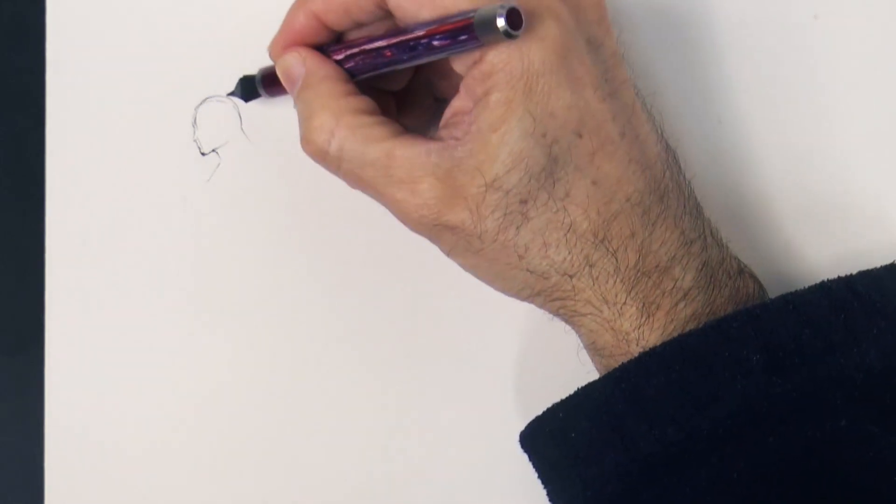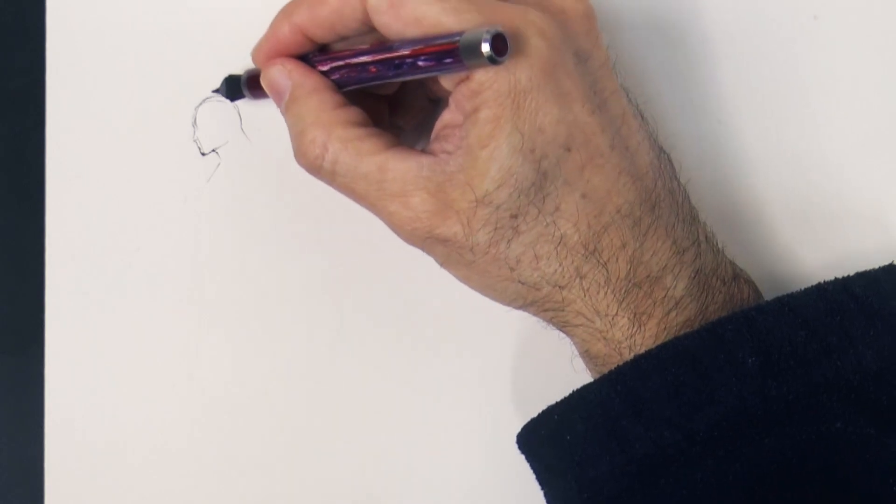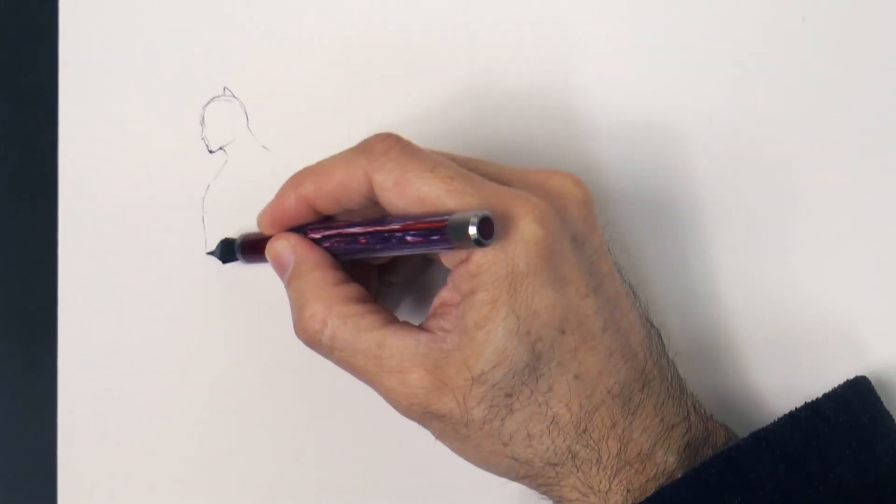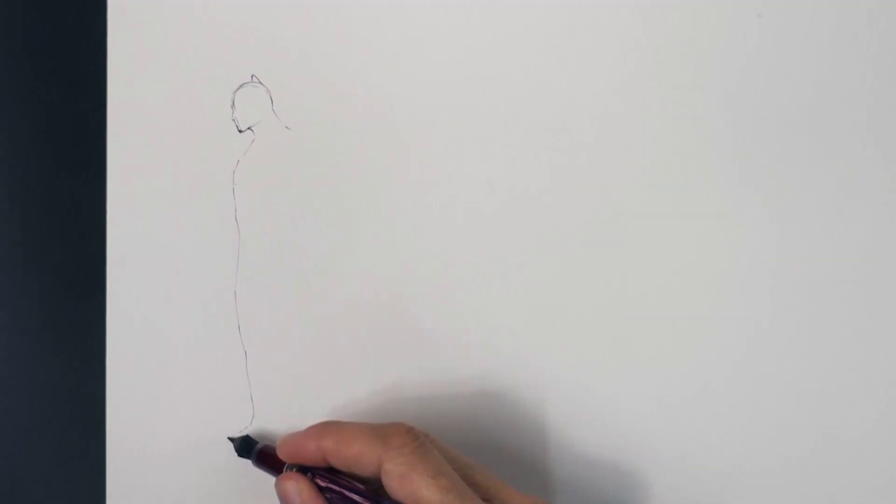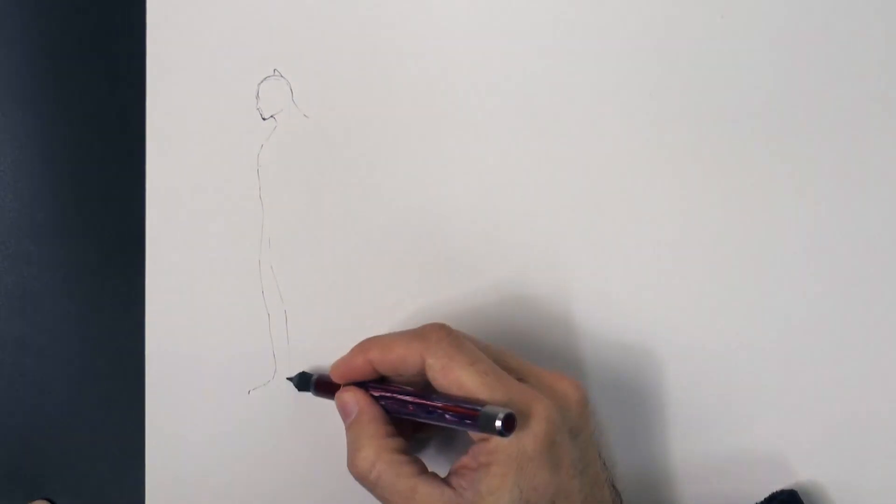Remember this is just a silhouette. The ear over here and then we come down to do the body, with the upper torso and the legs.